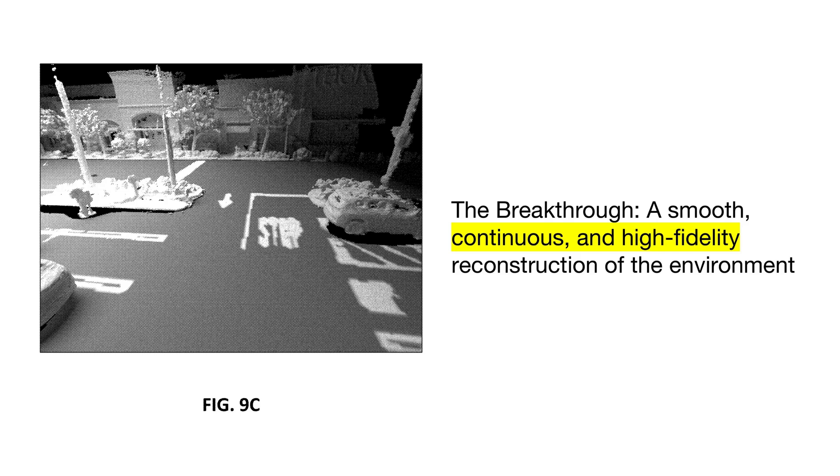And wow, this picture just says it all, doesn't it? Think back to that spotty point cloud and those clunky Lego blocks we just saw. Now look at this. This is the world as Tesla's new system sees it. It's not sparse, it's not blocky. It's a smooth, continuous, and super detailed reconstruction of everything around it. The quality here is just—it's on a whole other planet.